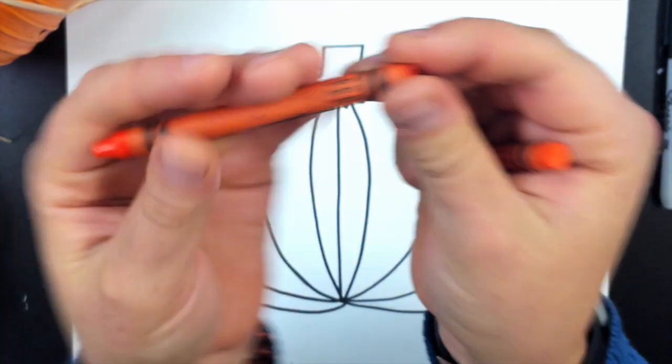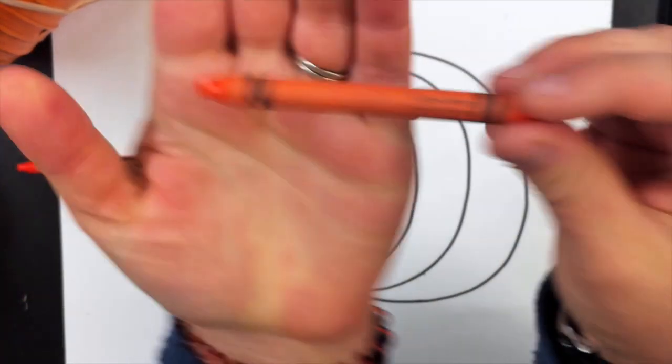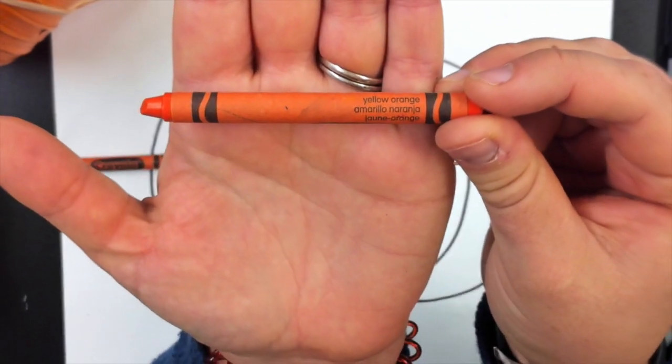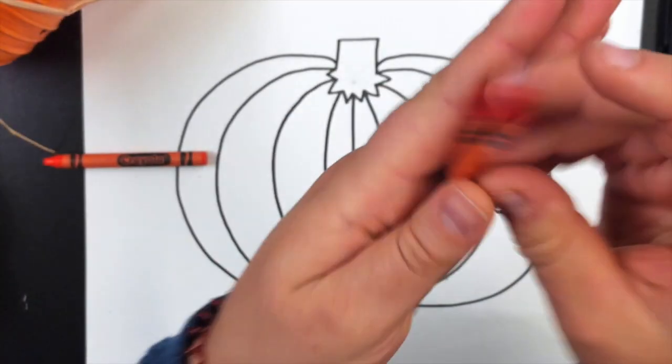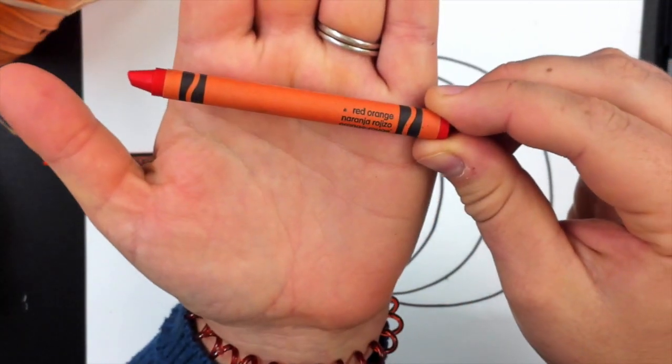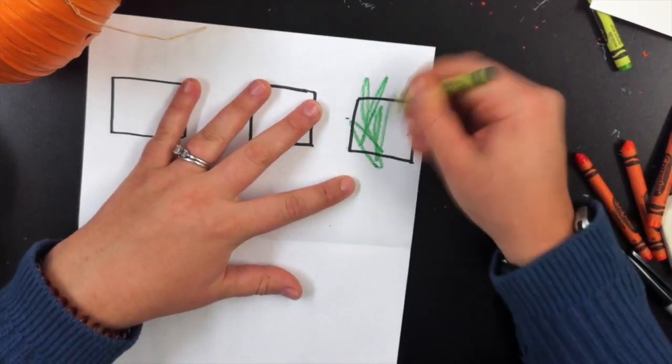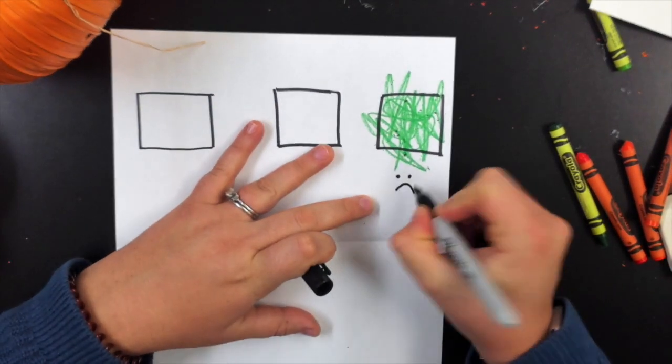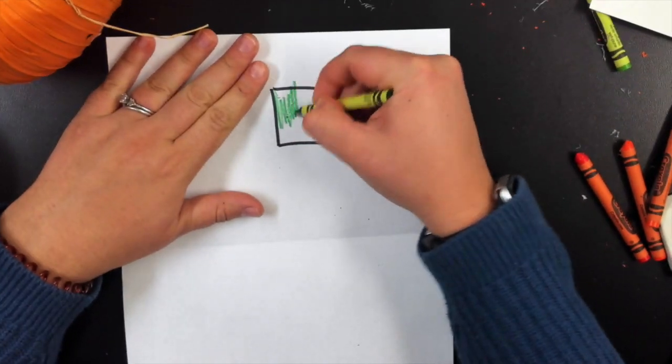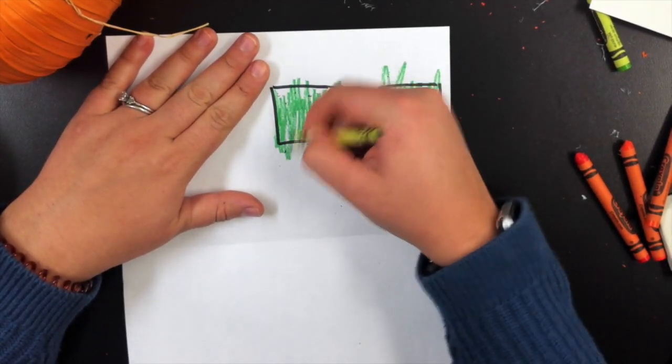The crayons you can use to color in your pumpkin are orange, yellow orange, and red orange. These are all types of orange. Before we start to color, I'd like to tell you and talk to you about how I would like you to color. You don't have to do these squares; these are just an example.